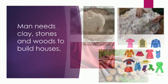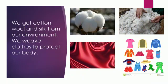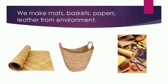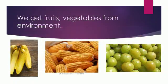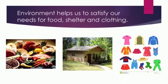Man also needs cotton, wool and silk from the environment to make clothes to protect his body. We make mats, baskets and paper using materials we get from the environment. Leather footwear is made from the skin of animals. It includes fruits like banana, crops like maize and vitamin-rich fruits in the diet, all obtained from our environment. In this way, our environment helps us to satisfy our needs for food, shelter and clothing.